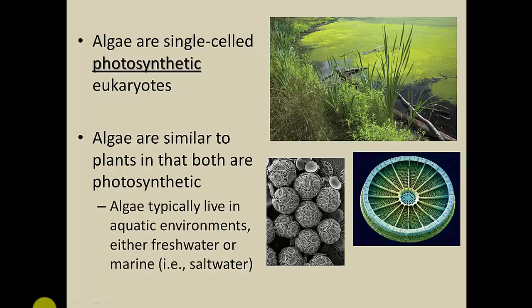The first group on the eukaryotic list are the algae. I like to think of algae as miniature plants, because they have a lot in common, starting with the fact that they are both photosynthetic. Photosynthesis is basically how these organisms take sunlight, CO2, and water and convert it into glucose, the type of sugar used for food. Algae can exist on land or in the water, but they tend to exist primarily in aquatic environments.